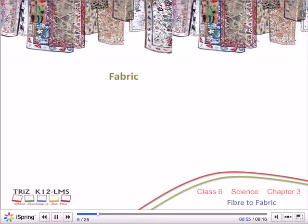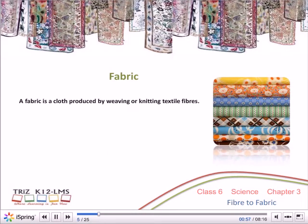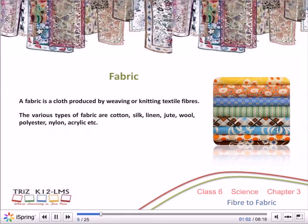A fabric is a cloth produced by weaving or knitting textile fibres. The various types of fabric are cotton, silk, linen, jute, wool, polyester, nylon, acrylic, etc.